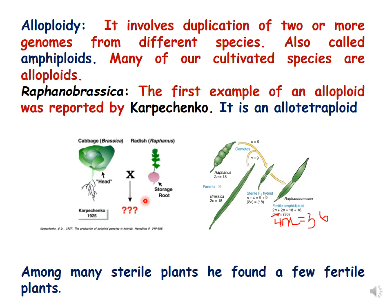Although the results were not as per his expectation and the plants were all sterile, when he observed some of the plants as fertile and checked their ploidy level, he found that they were tetraploids. When a cross is done between Raphanus sativus and Brassica oleracea — both have 18 chromosomes — hybridization produces a sterile hybrid. When chromosome doubling took place, probably by natural means, a fertile hybrid was formed, which turned out to be a tetraploid.